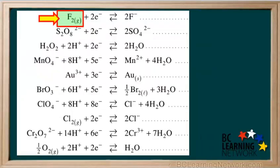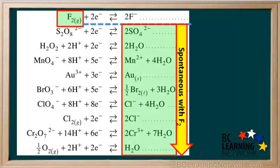Here is how it works. An oxidizing agent on the left will react spontaneously with every reducing agent on the right below it. Looking at your entire table, you can see that fluorine, or F2 gas, will react spontaneously with everything on the right side of the table other than F-. So fluorine is the strongest oxidizing agent on the table.